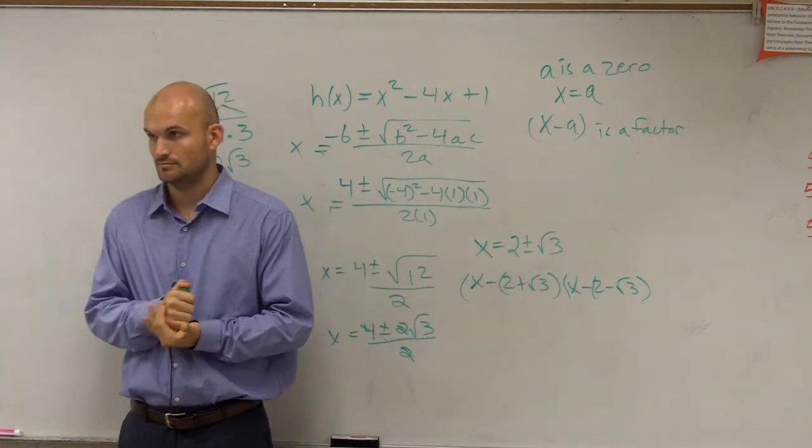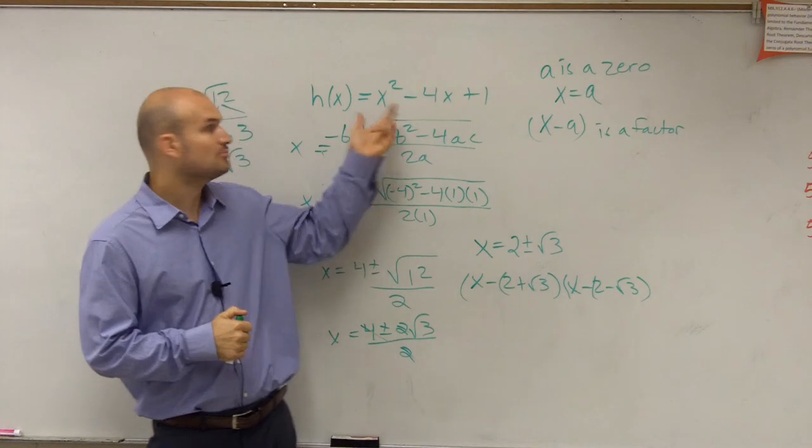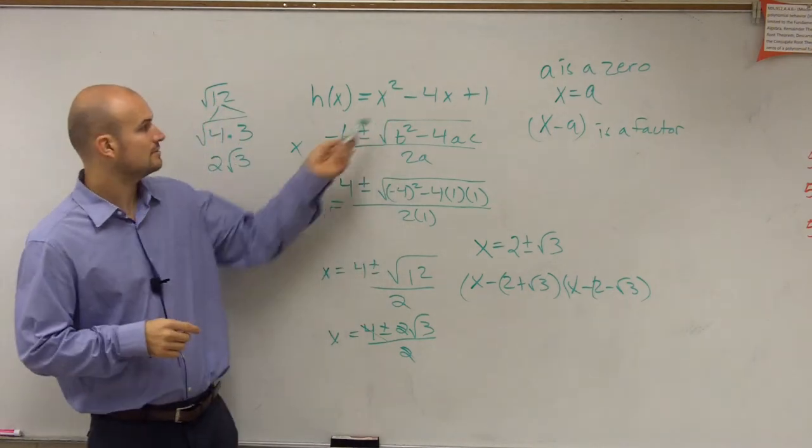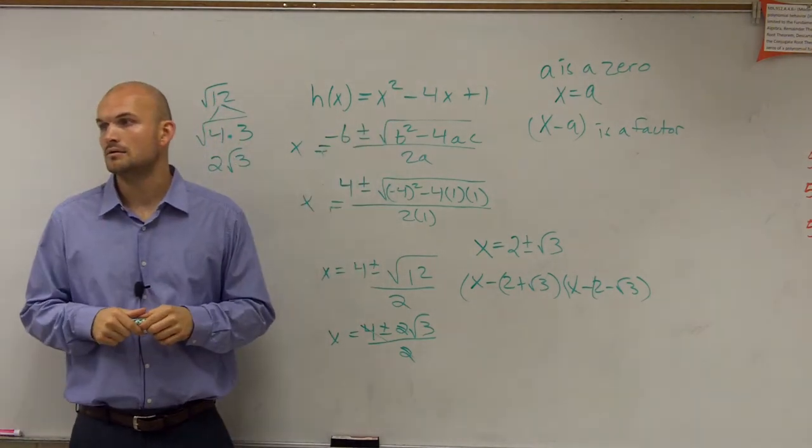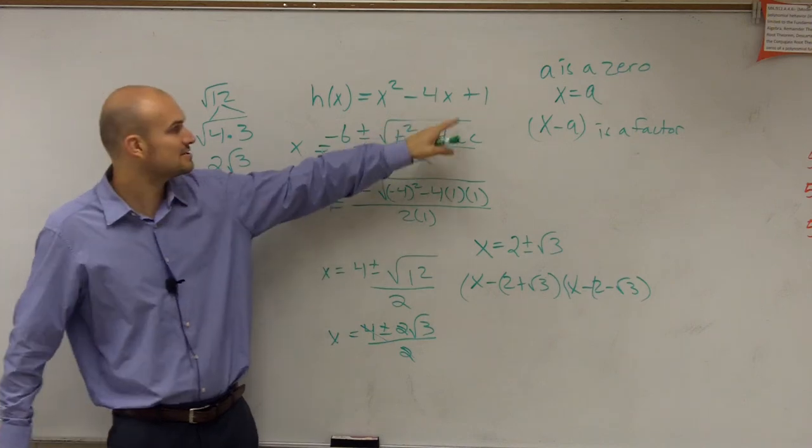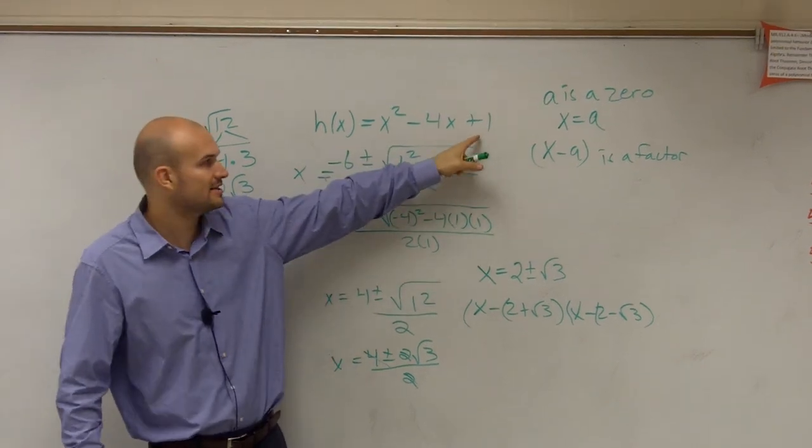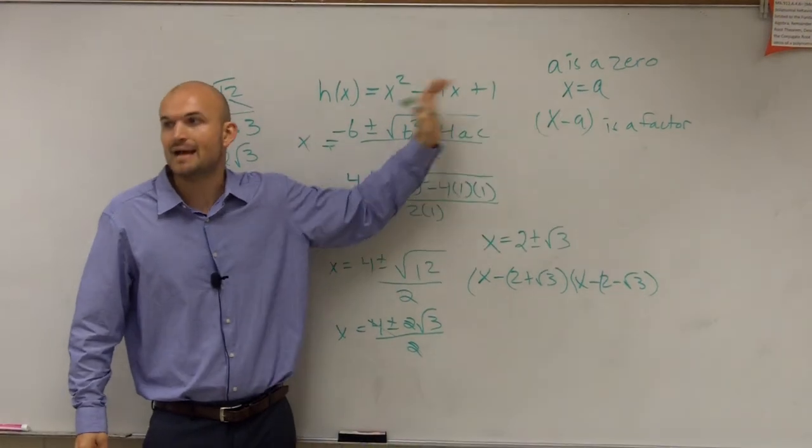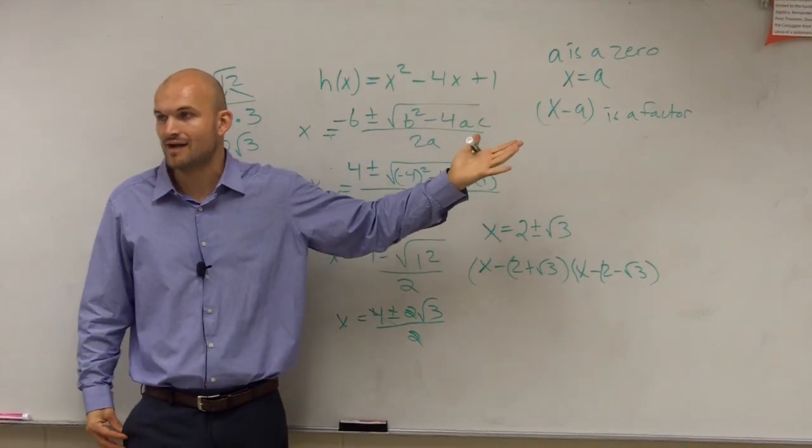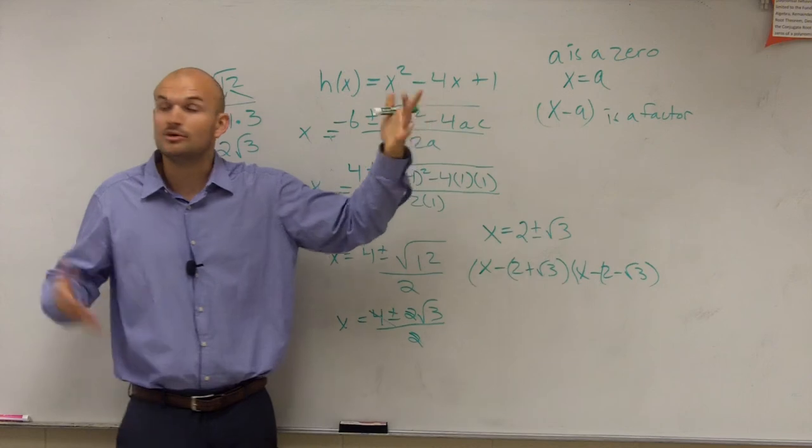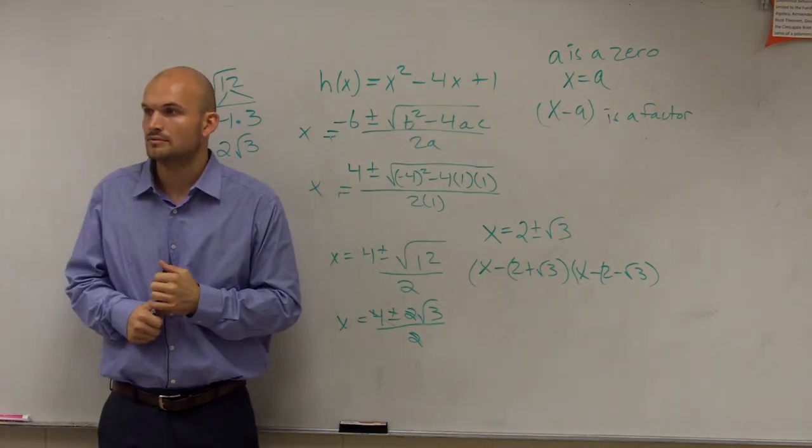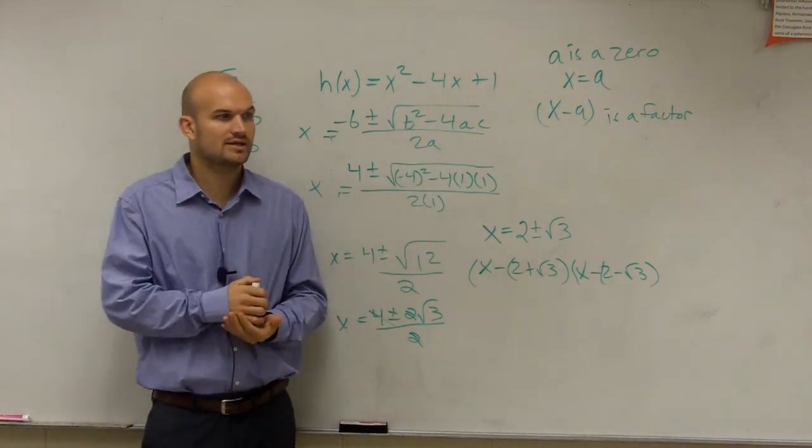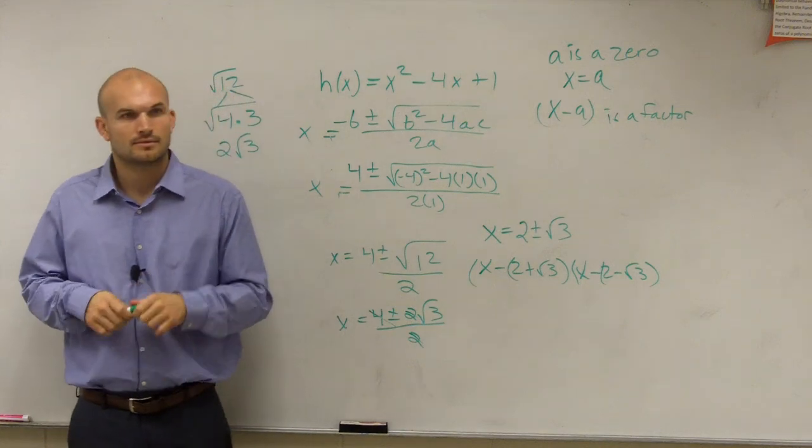What are the other ways you can solve it? You could complete the square, right? You can't factor it. Well, you can't factor it because remember if you try to break this down into two factors, you've got to find what two numbers multiply to give you one to add to give you negative four, which we don't have that, right? So you can't factor it. But you could complete the square, it would solve it as well. That would have given you the exact same answer.